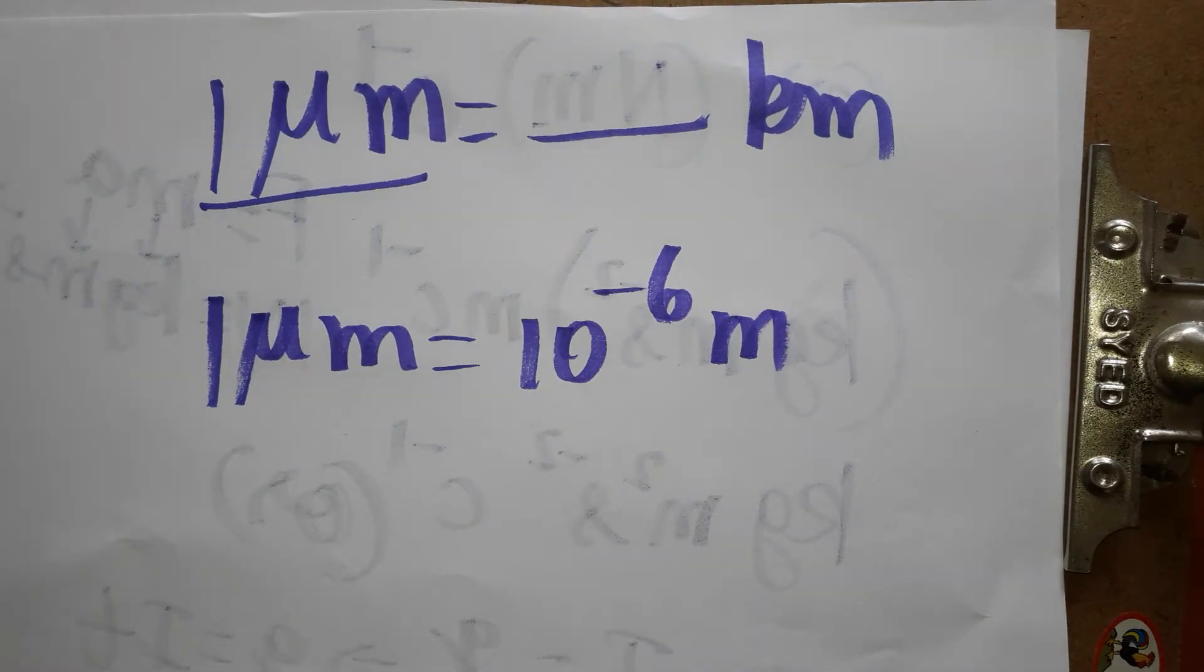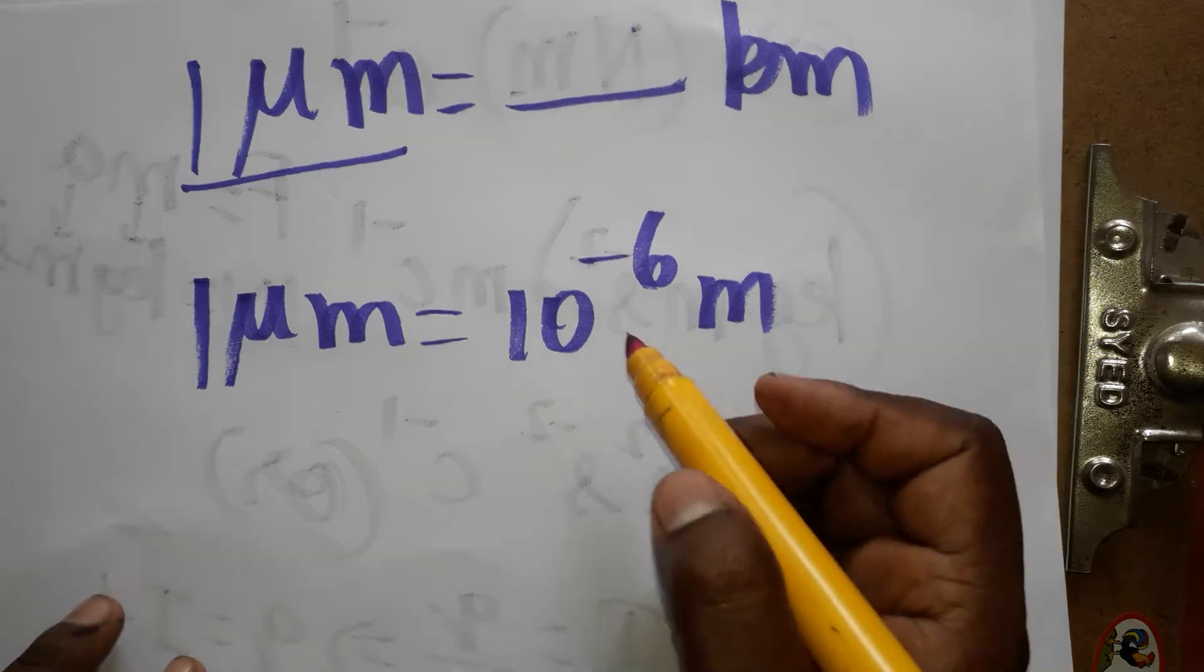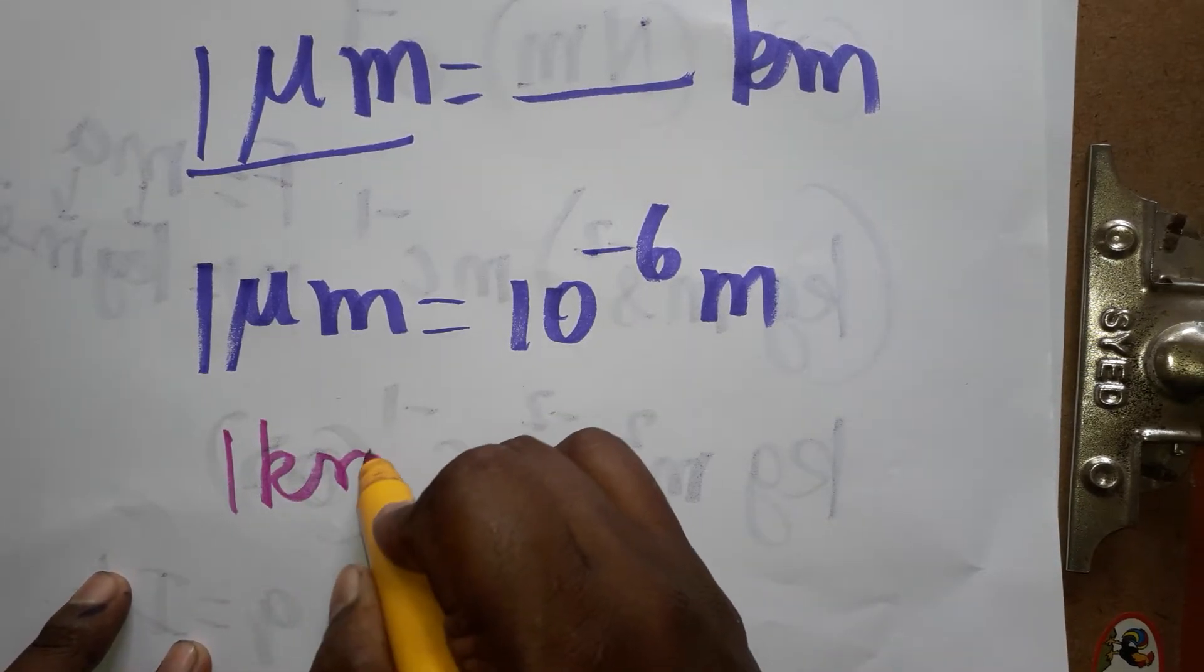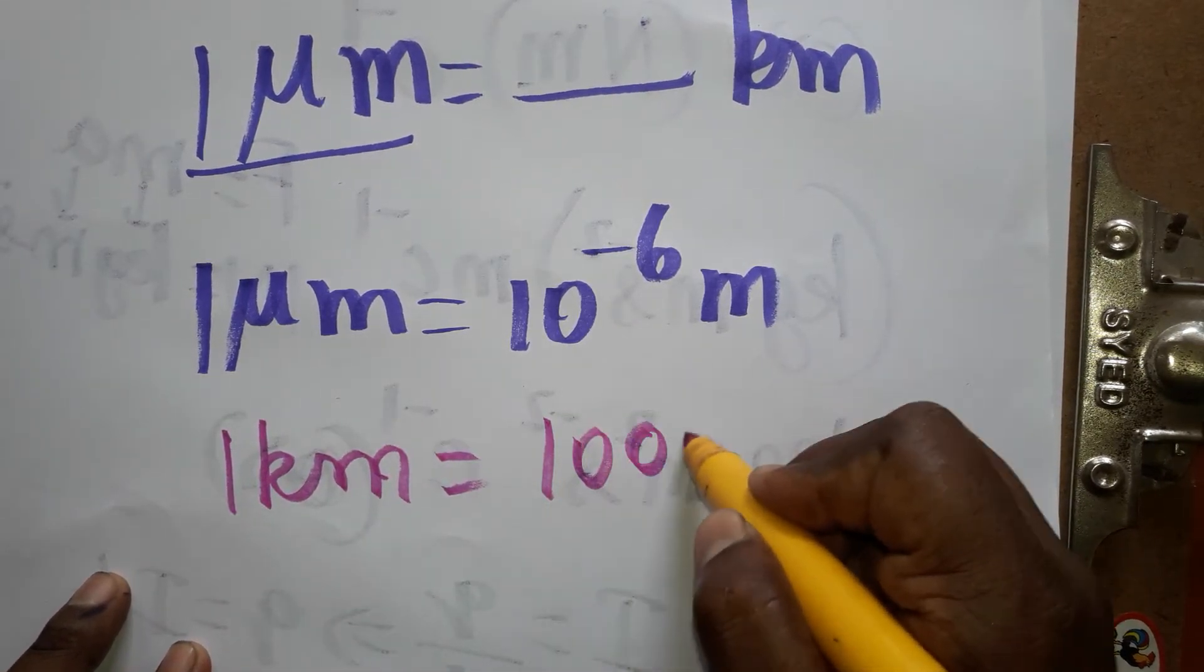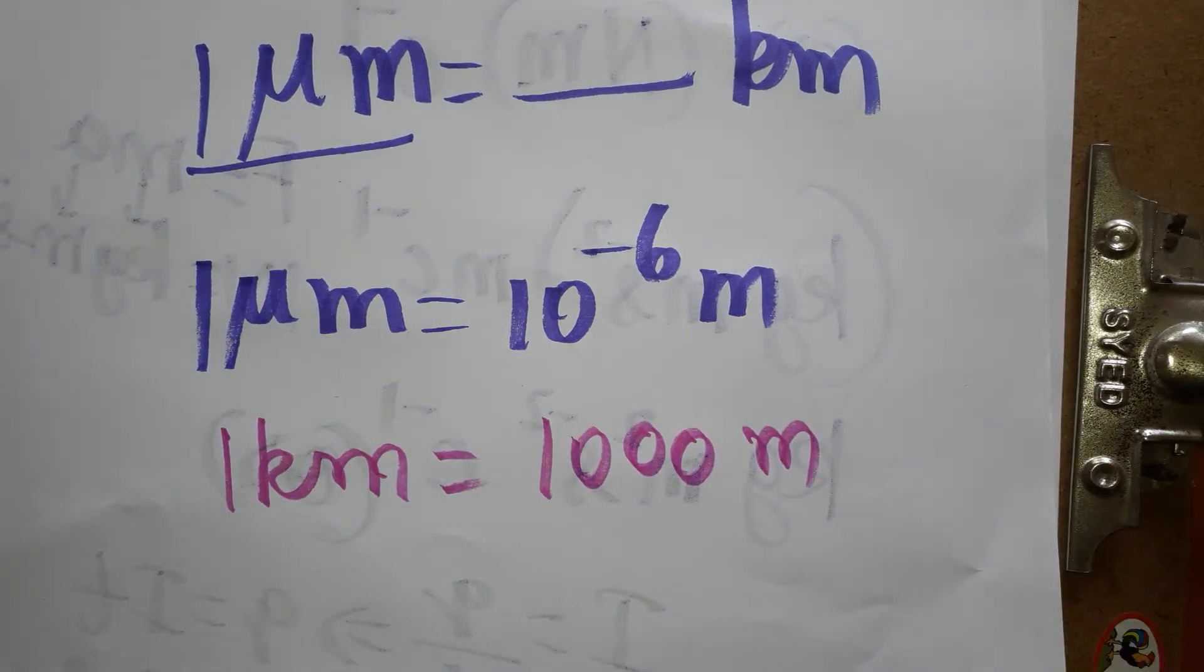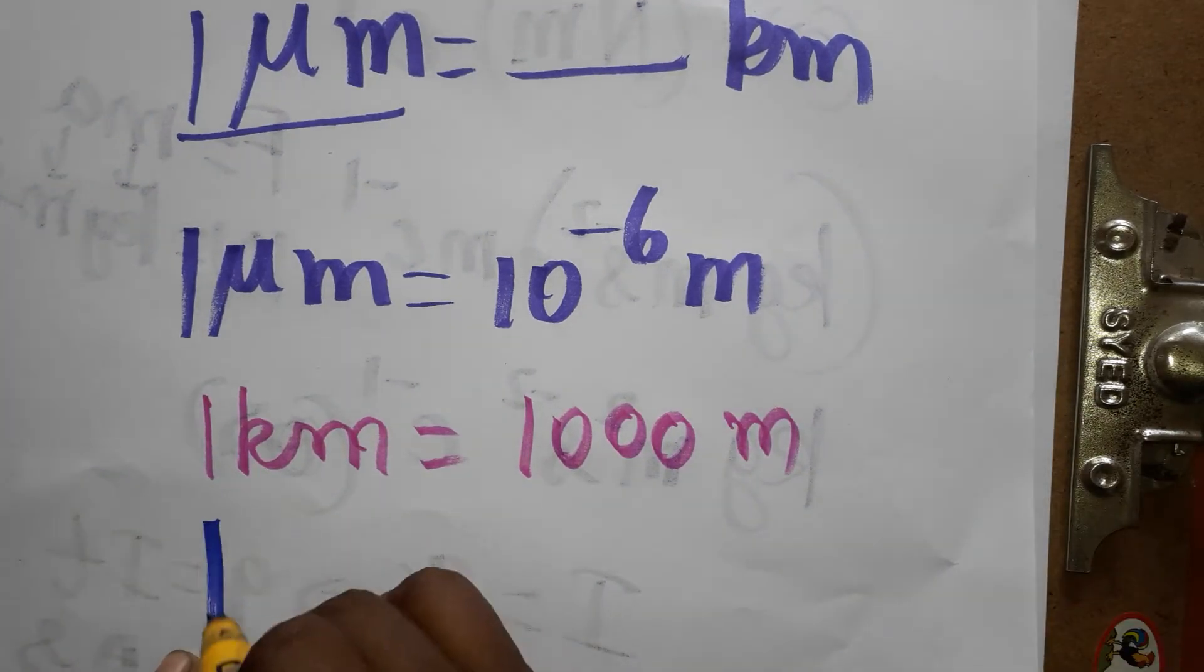One micrometer is 10 power minus 6 meter. One kilometer we can take it as a thousand meter, or 10 power three meter. So one kilometer we can take as 10 power three meter.